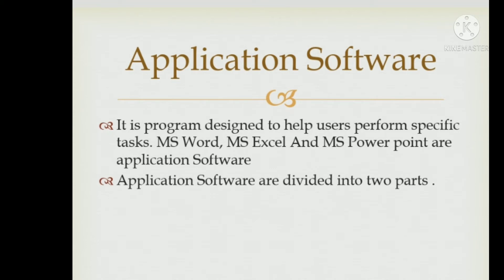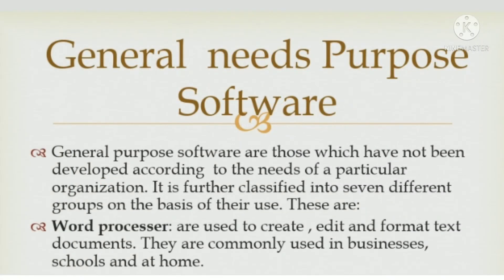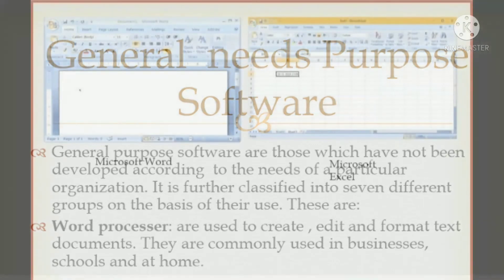Application software can be broadly classified into two categories: general purpose software and customized software. General purpose software are those which have not been developed according to the needs of a particular organization. It is further classified into seven different groups. First, word processors are used to create, edit, and format text documents. They are commonly used in business, schools, and at home.